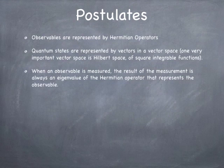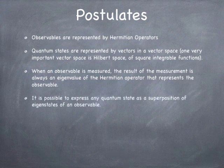When an observable is measured, the result of that measurement is always an eigenvalue of the Hermitian operator that represents that observable. So Hermitian operators have eigenvalues. The states that correspond with those eigenvalues are called eigenstates or eigenfunctions or eigenvectors. And the result of the measurement is always the eigenvalue that corresponds to that eigenvector that you end up measuring.